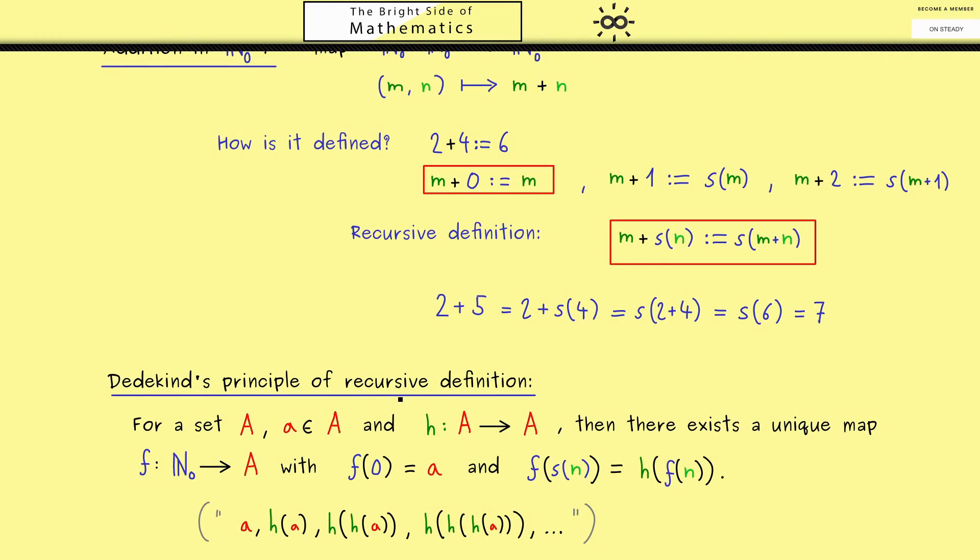Of course, often we just read the whole principle here backwards. This means that if we see something fixed at 0 and defined for the successors, then we know it exists and is uniquely defined by this property. For example, we now know that the addition is uniquely defined by these two boxes here.